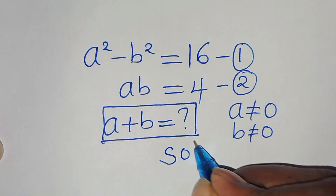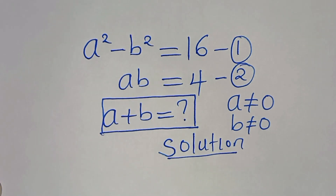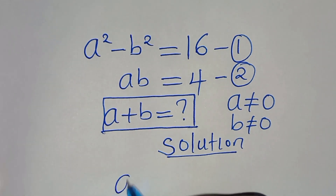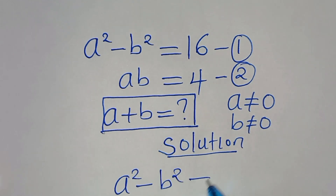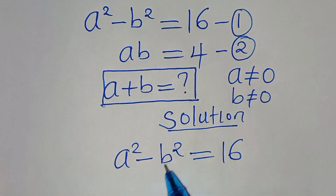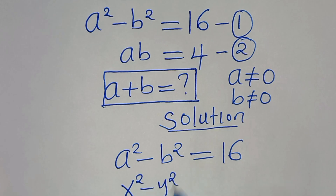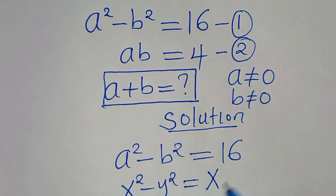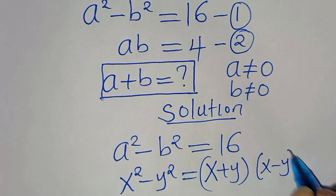So let's present a solution from here. From equation 1, which is a squared minus b squared equals 16, we note that a squared minus b squared is in the form of x squared minus y squared — the difference of two perfect squares — that can be expressed as x plus y, times x minus y.